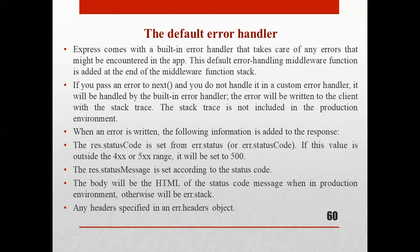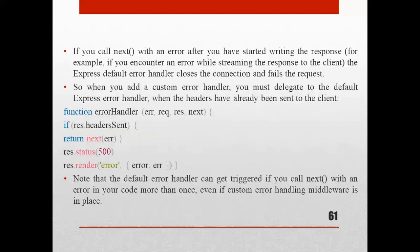The error will be returned to the client with the stack trace, but the stack trace is not included in the production environment. When an error is written, information is added to the response: response.statusCode is set from error.status. If the value is outside the 4xx or 5xx range, it will be set to 500. The response status message is set according to the status code, and the body will be the HTML of the status message in production, otherwise it will be error.stack.